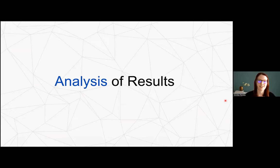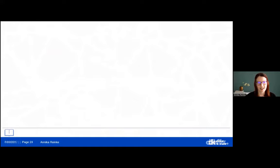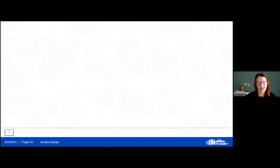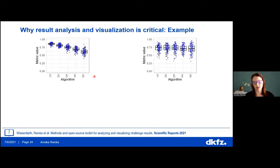Regarding result analysis, we found that nearly a third of challenge publications only report ranking tables without any further visualization, which is very problematic. In one example with five algorithms, box and dot plots of raw metric values clearly show a direct ranking — one algorithm is definitively better than the others. But in another example, all five algorithms appear completely equivalent with no meaningful differences, yet both examples would produce the exact same ranking table.